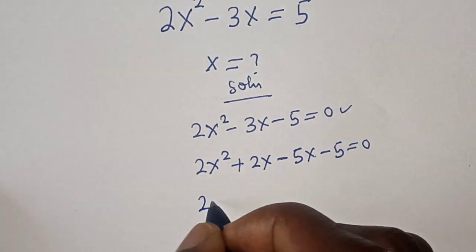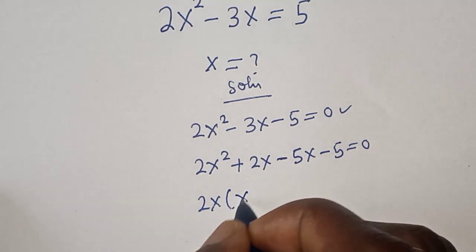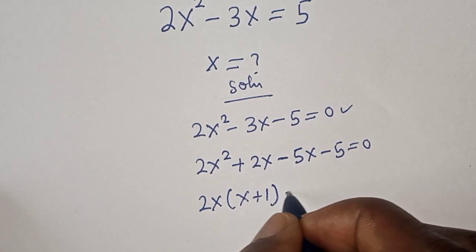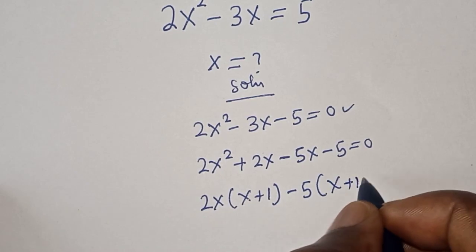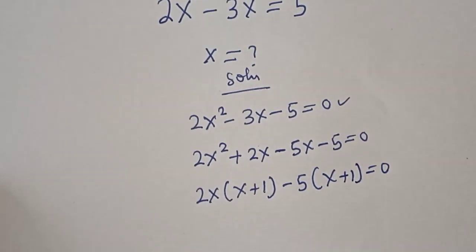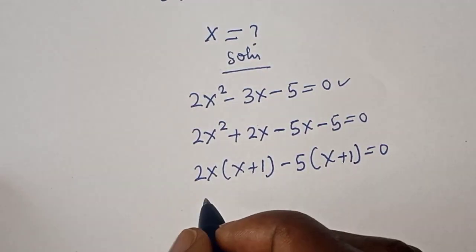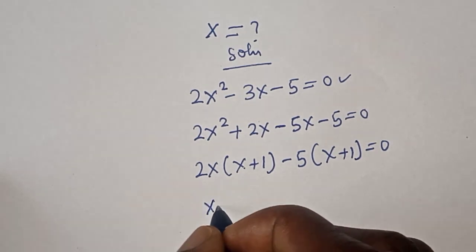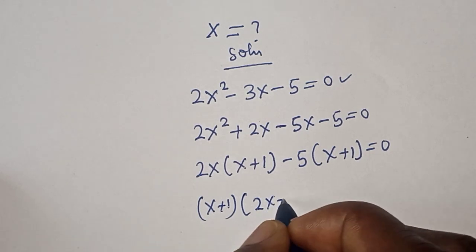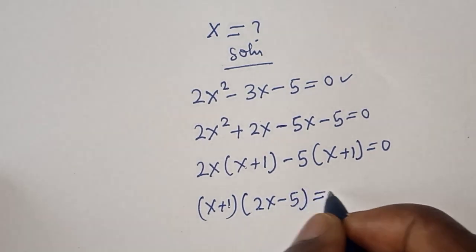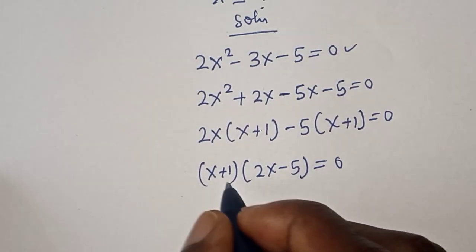Let's bring it out: 2x(x + 1) - 5(x + 1) = 0. x + 1 is common, so (x + 1)(2x - 5) = 0. There are two cases here.